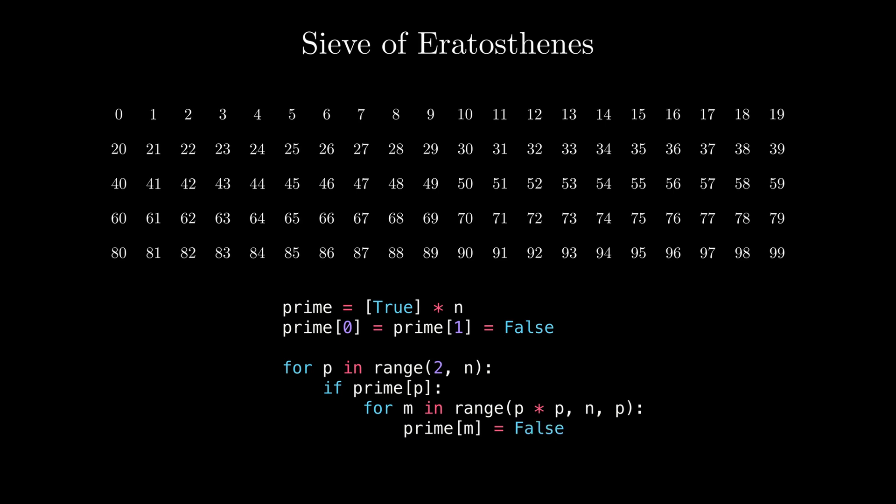So we start from p times p and go up to n with the jump of p and mark all the numbers as non-prime. Okay, let's see the algorithm in action. Let's assume that we would like to find all the prime numbers up to 100.